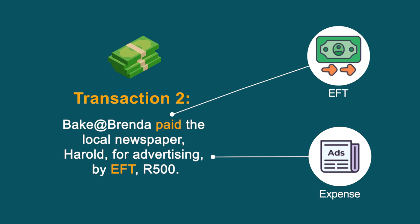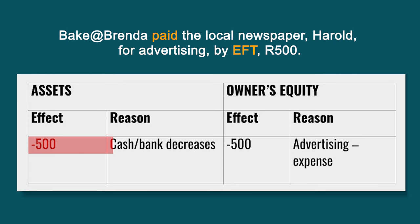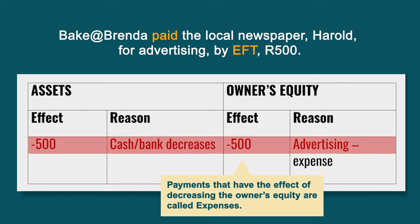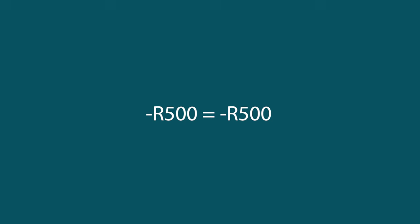Transaction two: Baker Brenda paid the newspaper for advertisement. This means money was deducted from the current bank account of the business. Advertising is an expense for the business because a payment was made for a service. The asset Cash or Bank decreases by R500. No asset was obtained for the payment, so total assets decrease by R500. Consequently, Owner's Equity decreases by R500.